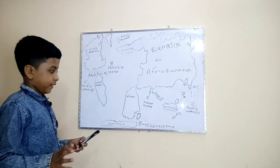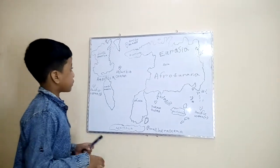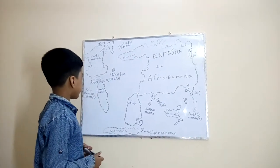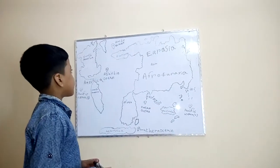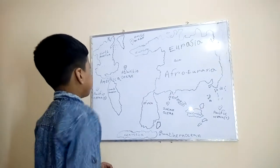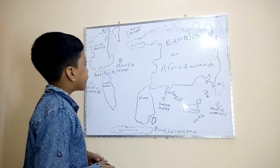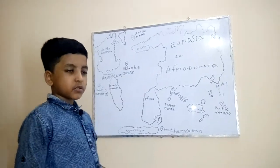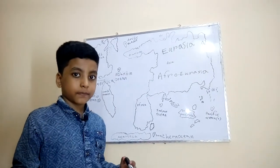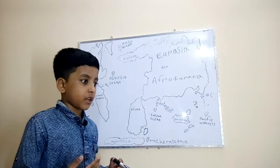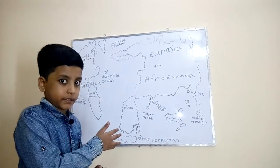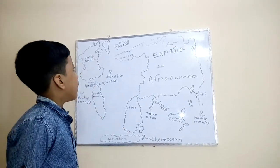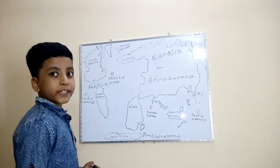The next continent we're going to talk about is Europe. Europe is surrounded by the Atlantic Ocean and the Arctic Ocean. Europe is the second smallest continent — actually I'm telling them in size comparison from smallest to largest — and Europe has 50 countries.